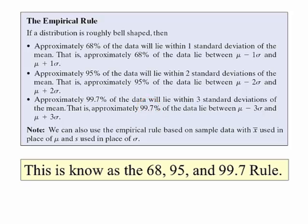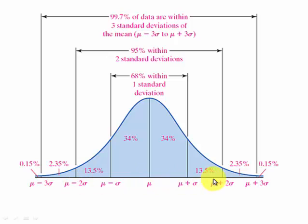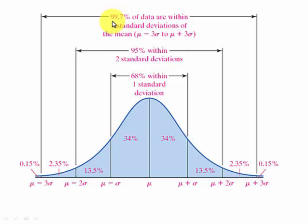This is known as the 68, 95, and 99.7 rule. Let's look at this rule visually. We have the mean in the middle, and if we go one standard deviation below and one above, this contains 68% of the data. If we go two standard deviations below and above the mean, that's approximately 95% of the data. And if we go three standard deviations below and above the mean, this contains approximately 99.7%, or pretty much all the data.